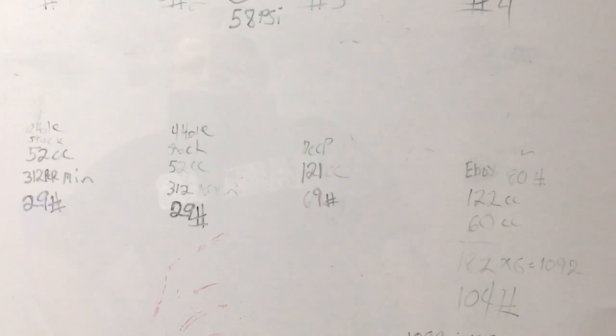Beaker number two, stock truck injector four-hole cap, which we were both gambling would flow more than a two-hole, flowed the exact same amount. They were measured out exactly 52 cc's in 10 seconds, 312 per minute, 29 pounds an hour. We didn't get any difference at all between the two-hole cap and the four-hole cap on the factory injector.